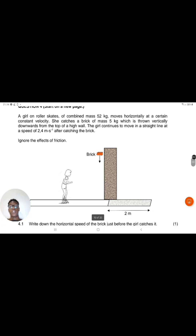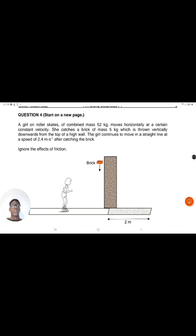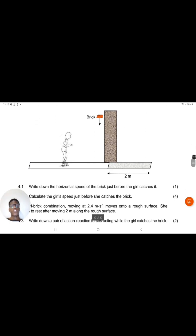The question says: a girl on roller skates of combined mass 52 kilograms moves horizontally at a certain constant velocity. She catches a brick of mass 5 kilograms which is thrown vertically downwards from the top of a high wall. The girl continues to move in a straight line at a speed of 2.4 meters per second after catching the brick. Ignore the effects of friction.